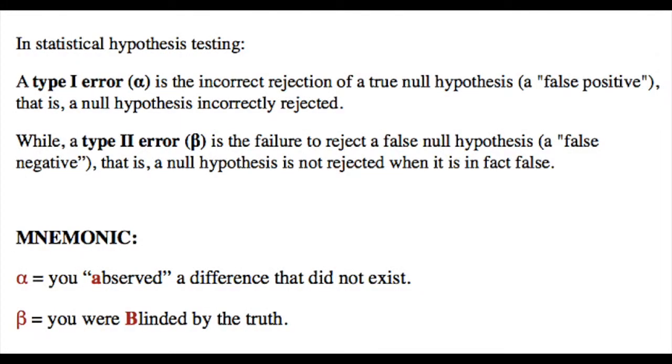In statistical hypothesis testing, a Type I error (alpha) is the incorrect rejection of a true null hypothesis - that is, a null hypothesis incorrectly rejected.